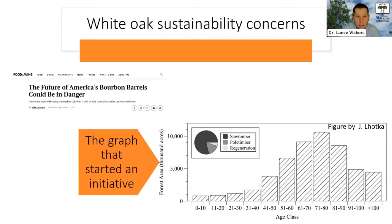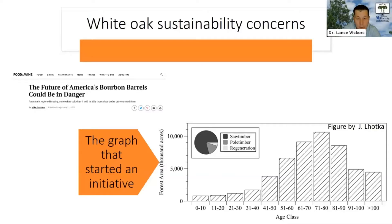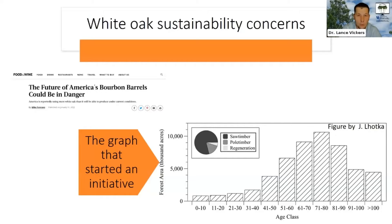There are growing concerns that the long-term sustainability of that resource is not assured. That really comes from realizations from folks like John Locke and Jeff Stringer here at the University of Kentucky, looking at this age distribution and seeing that most of the White Oak we have is in mature stands — 70, 80, 100-plus years. But younger forests don't have as much White Oak in them as we'd like, so as those younger forests become tomorrow's mature forests, we may face a shortfall.